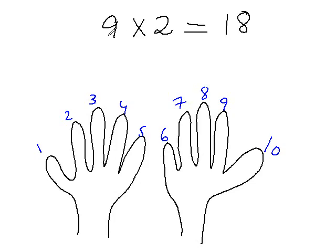Since it is 9 times 2, you just fold the second finger of your hand. So how many fingers are left here, 1, that's your first digit, and how many fingers are left here, 3 and 5, that is 8 and you have the answer.